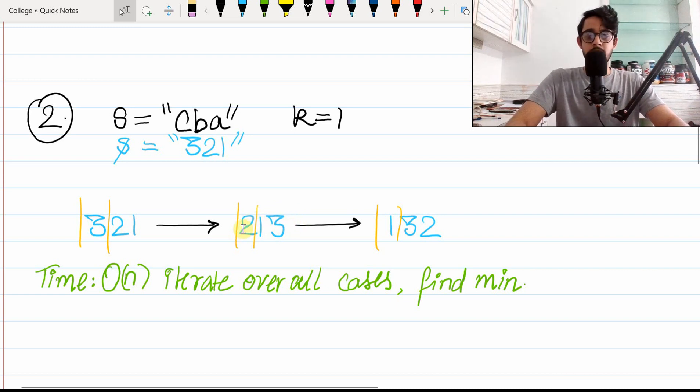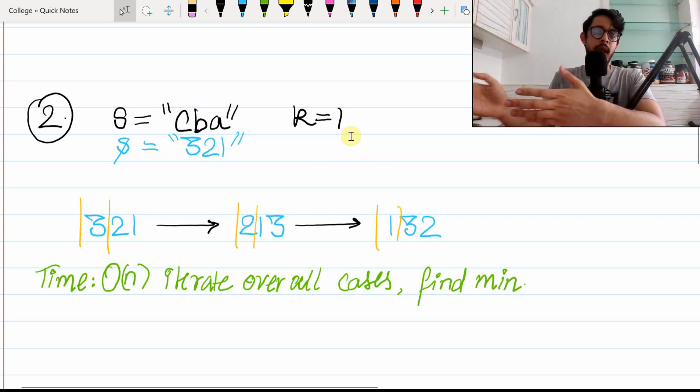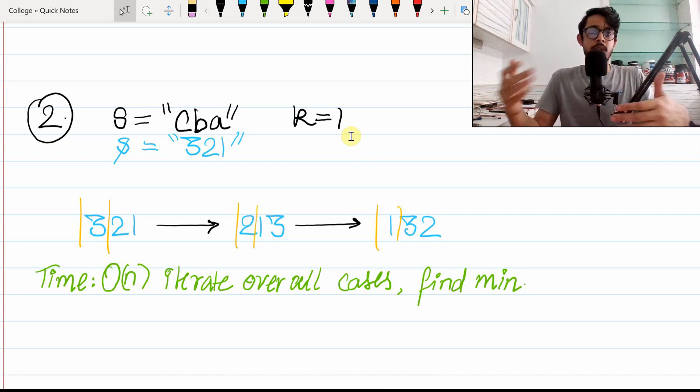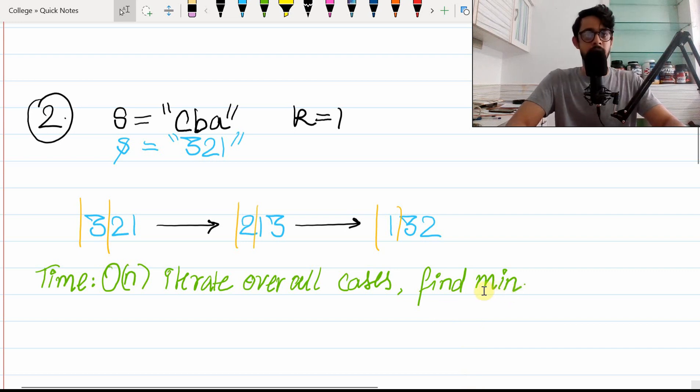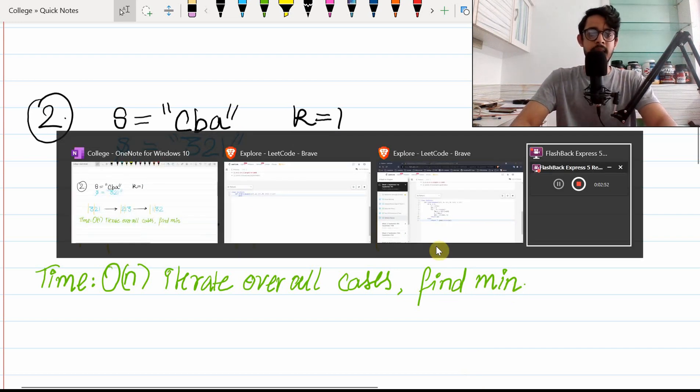Similarly, in this case we'll select 2 and kick that out, so we'll get 1-3-2. The case of k equals 1 is actually quite trivial—you just need to enumerate over all the possible cases which are going to be n in length for n equals the length of the string, and of all those cases we can simply find the minimum.